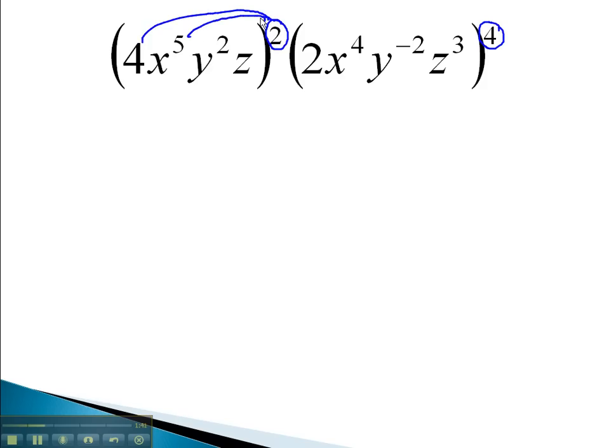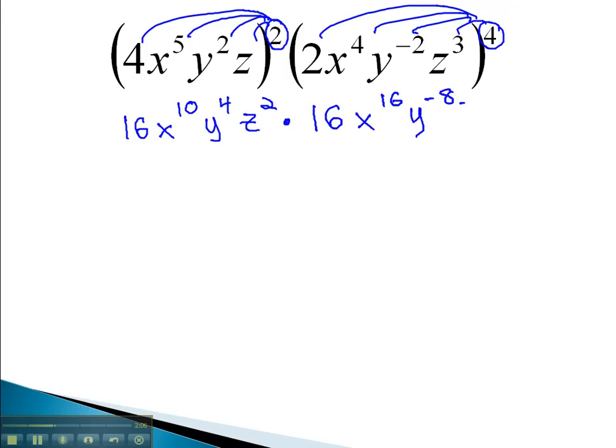The exponent, using the power rules, will go onto each factor. As it does, we will multiply exponents, and on the numbers, consider 4 squared is 16, x to the 10th, y to the 4th, z squared, multiplying those exponents. Times 2 to the 4th, which is also 16, x to the 16th, y to the negative 8, z to the 12th, multiplying our exponents together.